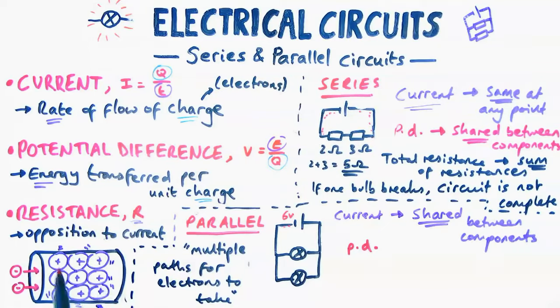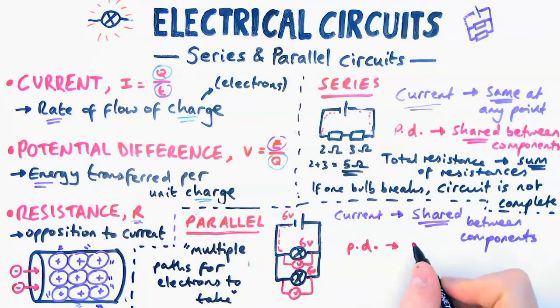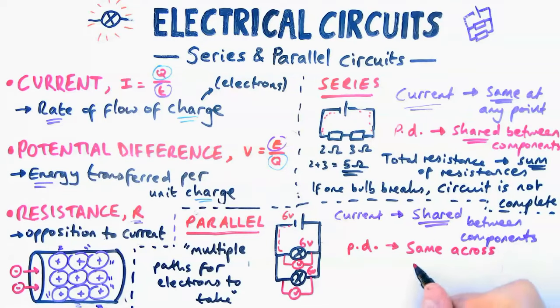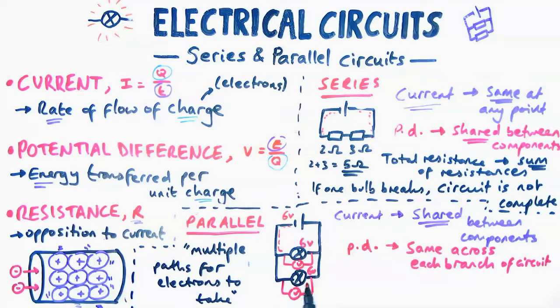Potential difference, and this is the one that always catches people out, is actually the same across each branch. Reason for that is because regardless of how many electrons there are across a branch, they are going to have the same amount of energy from the battery. So therefore, at six volts they pick up at the battery, they are going to transfer six volts per coulomb of charge at each branch. So therefore, the PD is the same across each branch of the circuit.